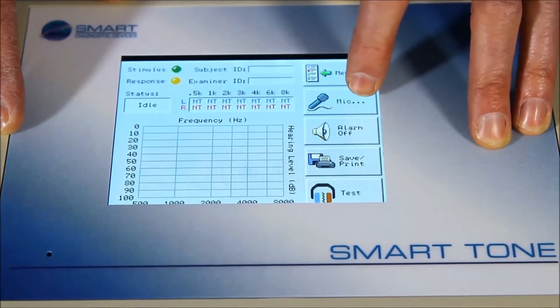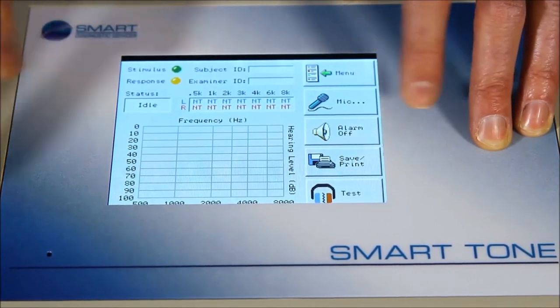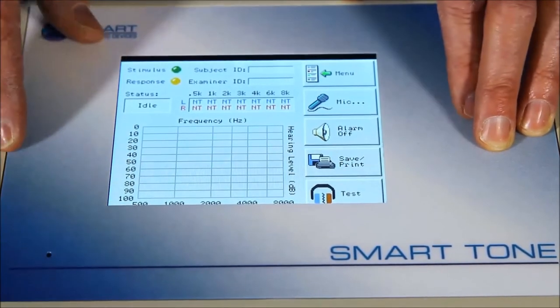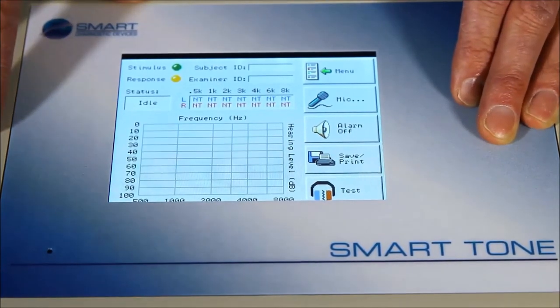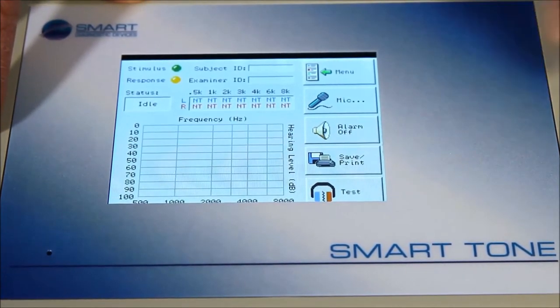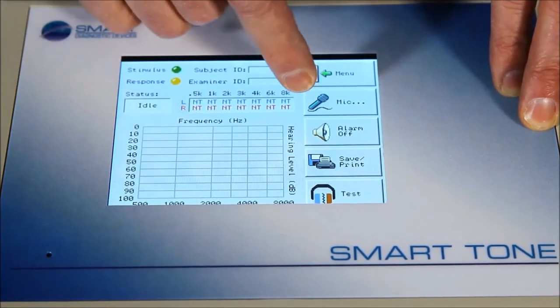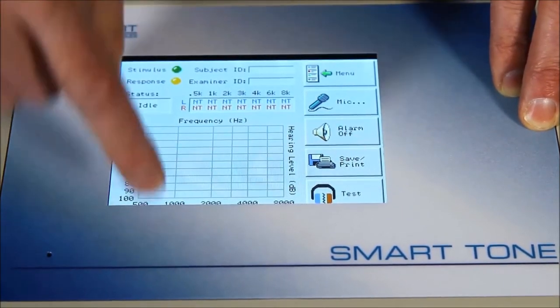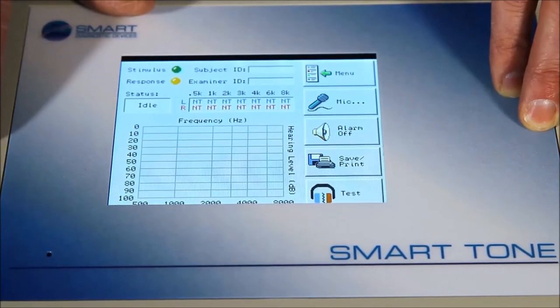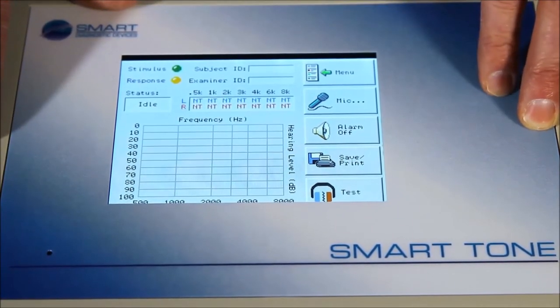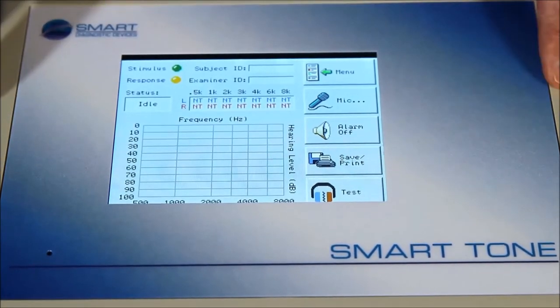We also have a mic button, second button down here. That gives you the ability to use the talk-over feature of the device. If someone's in a sound booth and connected to inside the sound booth, you can push the talk microphone button and you create a talk-over scenario where the person can hear you, maybe re-explaining the test and how it should be taken through the actual headset that they're wearing.